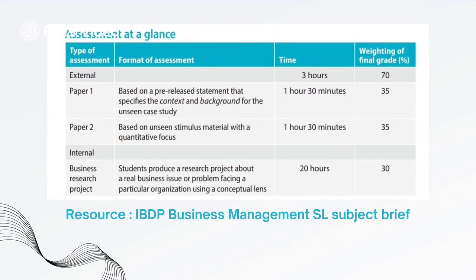Assessment at a glance: Paper One is based on a pre-release statement that specifies the context and background for an unseen case study. It takes approximately one hour and 30 minutes and is worth approximately 35% of the final grade. Paper Two is based on unseen stimulus material with a quantitative focus, also one hour and 30 minutes and worth 35%. The Business Research Project, in which students produce a research project about a real business issue or problem facing a particular organization using a conceptual lens, is worth approximately 30%.